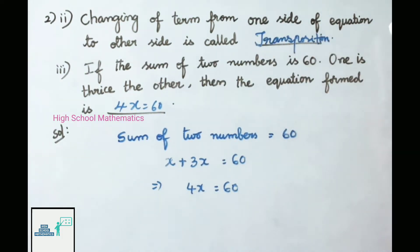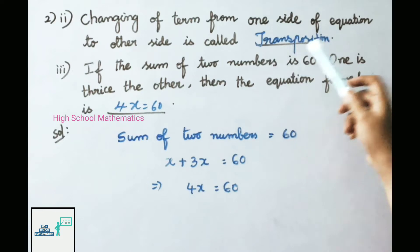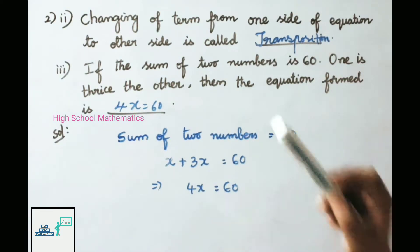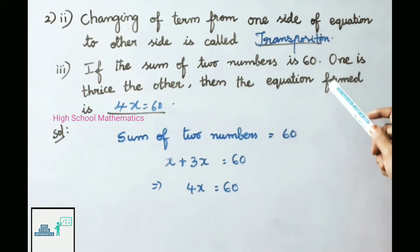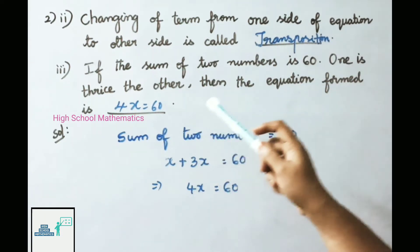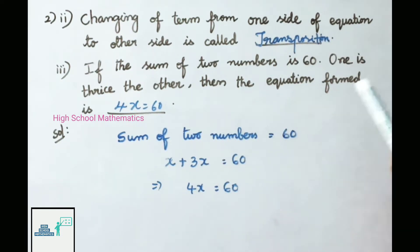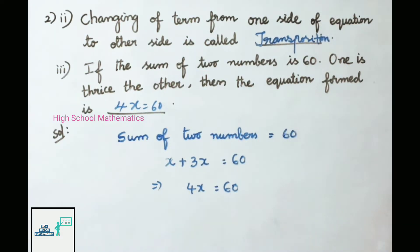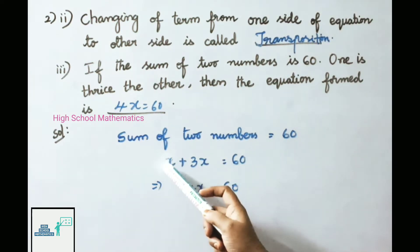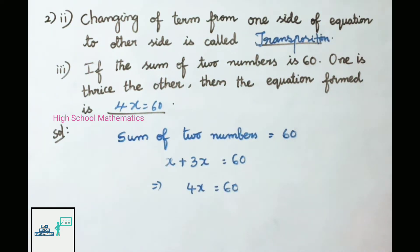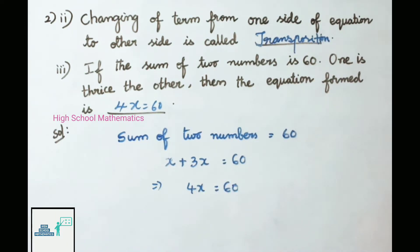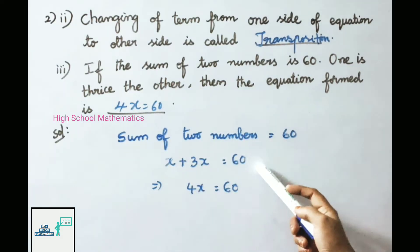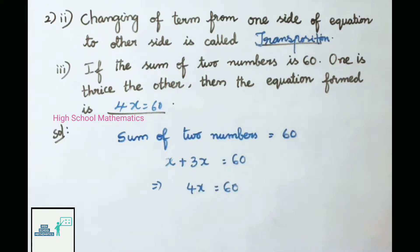Second: changing a term from one side of an equation to the other side is called transposition. Third: if the sum of two numbers is 60 and one is thrice the other, let one number be x, then the other is 3x. So x + 3x = 60, that implies 4x = 60. Therefore the equation formed is x + 3x = 60 or 4x = 60.